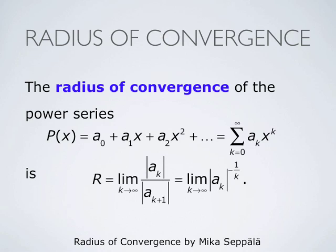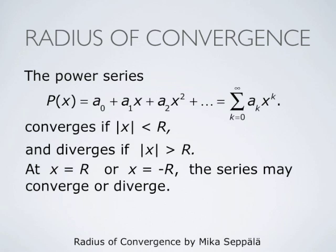To summarize: for a power series p(x) equals summation k from 0 to infinity of a_k times x^k, if the limits as k goes to infinity of |a_k|/|a_{k+1}| and of |a_k|^{-1/k} both exist, then they are equal. Their common value is called the radius of convergence R. The series converges if |x| < R, diverges if |x| > R, and if |x| equals R the series may converge or diverge — a closer study using other methods must be performed.